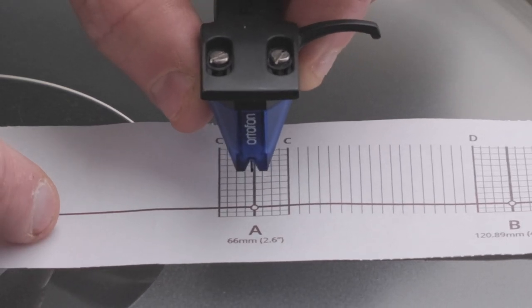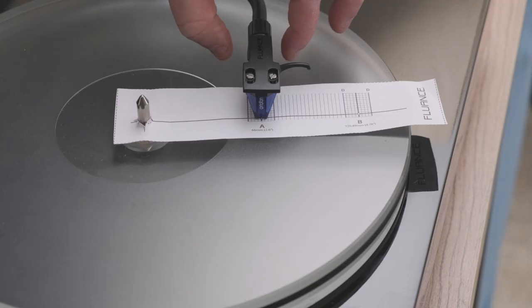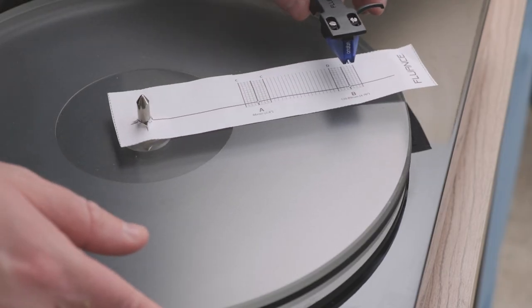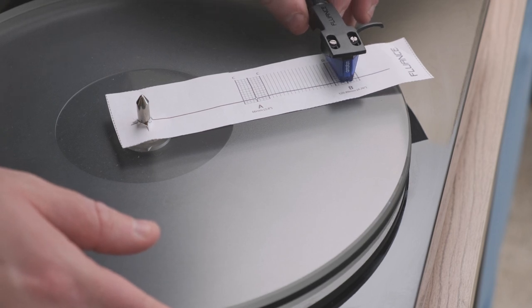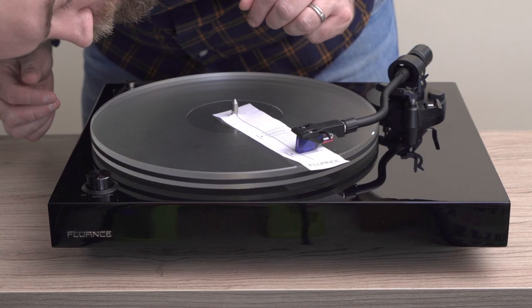Once it's parallel, move the stylus tip to point B. If the cartridge is properly aligned at point B, tighten the screws, recheck to make sure it's aligned, and you're done.